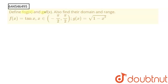Hello students. The question is: define f(g(x)) and g(f(x)), and also find their domain and range. f(x) = tan(x) where x belongs to (-π/2, π/2), and g(x) = √(1 - x²). Let's solve this problem.